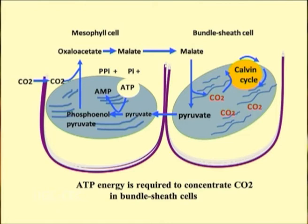Thus, C4 plants maintain a high CO2 to O2 ratio in photosynthetic cells, minimizing photorespiration. This ability to avoid photorespiration makes these plants hardier than other plants in dry and hot environments, wherein stomata are closed and internal CO2 concentration levels are low. Under these conditions, photorespiration does occur in C4 plants, but at a much reduced level compared with C3 plants in the same conditions.